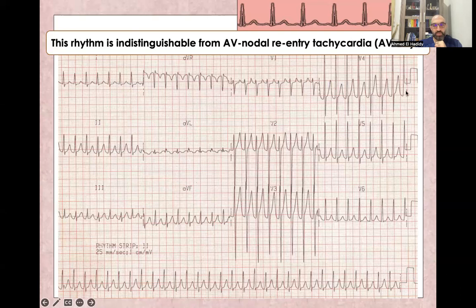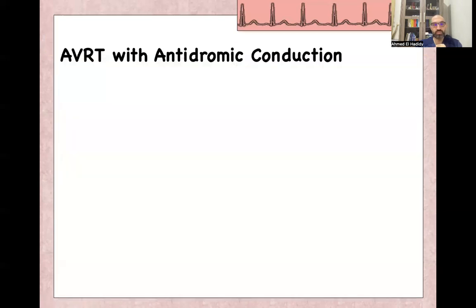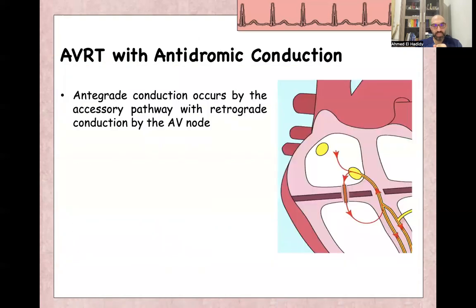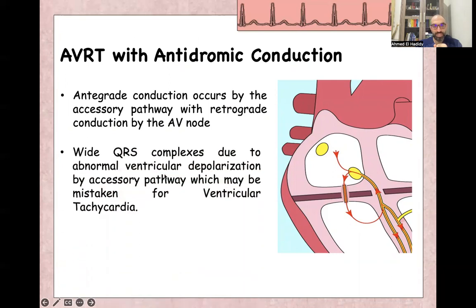This rhythm is difficult to differentiate from AV nodal re-entry tachycardia, which will be discussed in a different video. Regarding antidromic conduction: antidromic conduction means retrograde conduction from ventricle to atria through the AV node and bundle of His, with anterograde conduction from atria to ventricle through the accessory pathway. This leads to wide QRS complexes, as ventricular activation occurs first through the accessory pathway, and it is usually mistaken for ventricular tachycardia. If in doubt, treat as ventricular tachycardia.